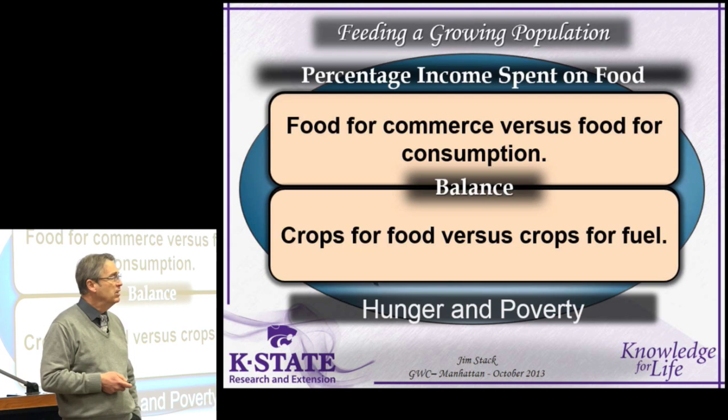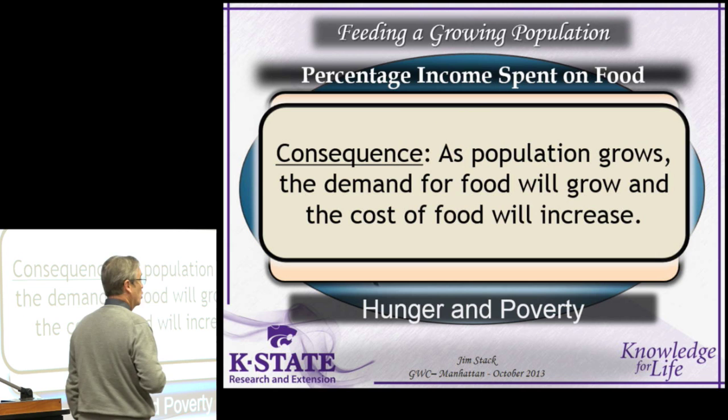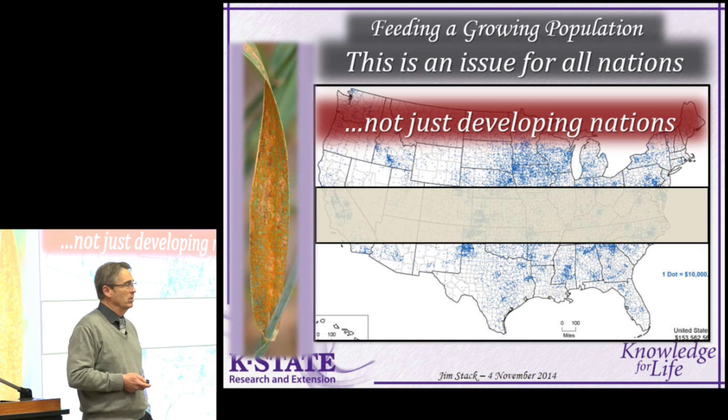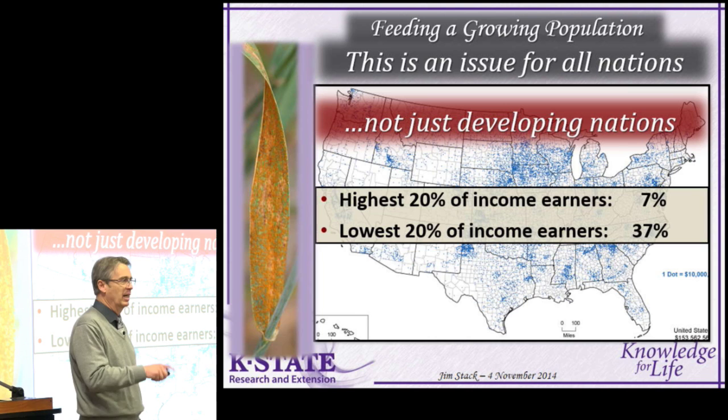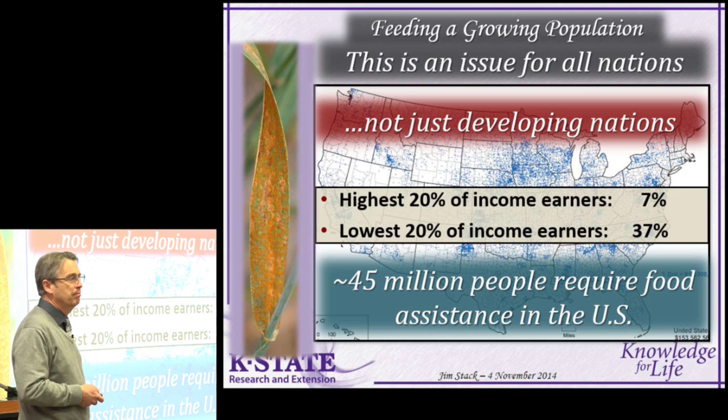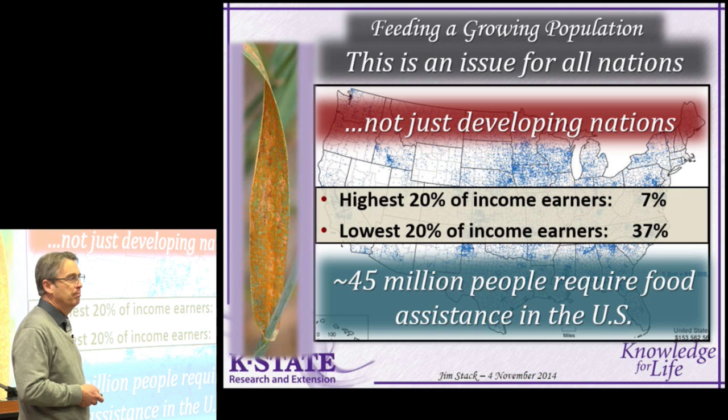As population grows, the demand for food will grow, and the cost of food will increase. This is not just an issue for developing nations. In the United States, the highest 20% of income earners spend about 7% of their income on food; the lowest 20% spend 37%. 45 million people require food assistance almost every year. As the cost of food rises, standards of living will fall and the numbers in poverty will increase.